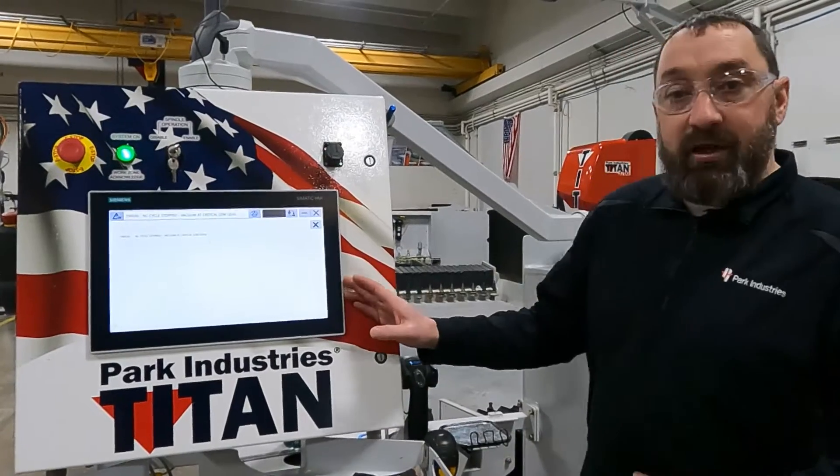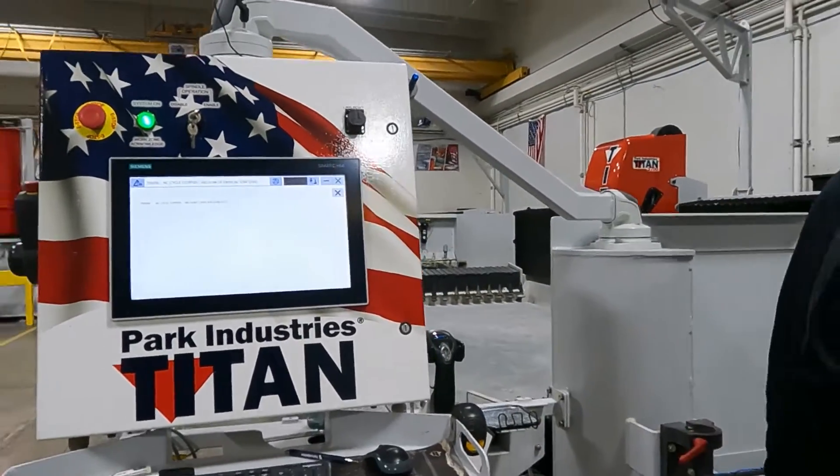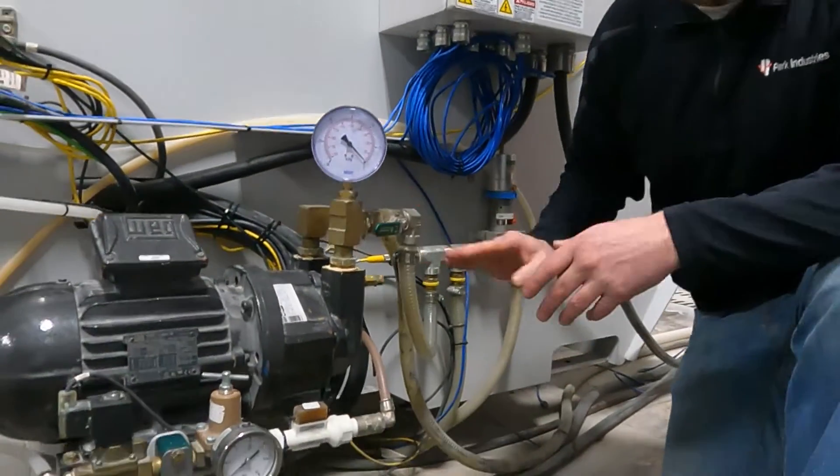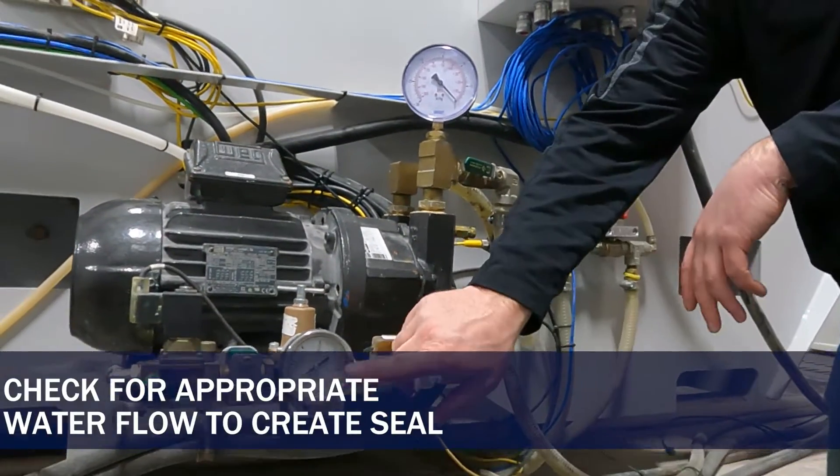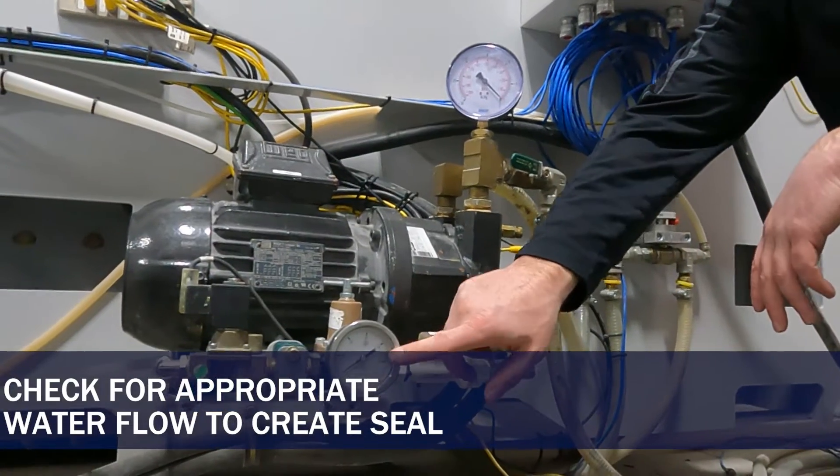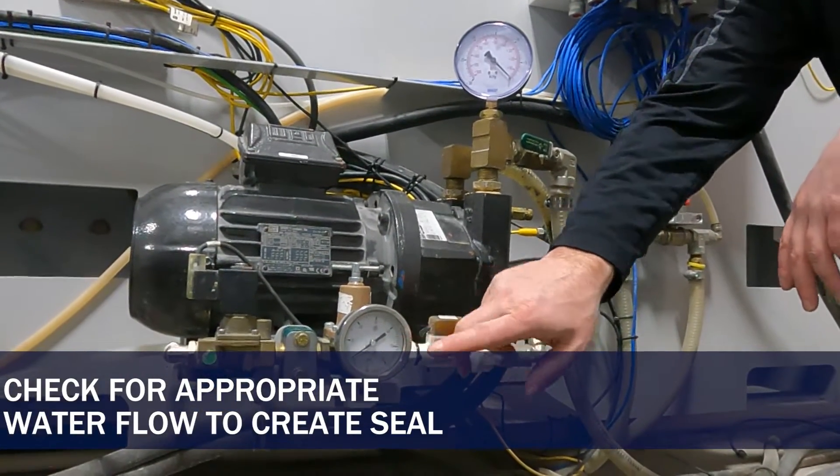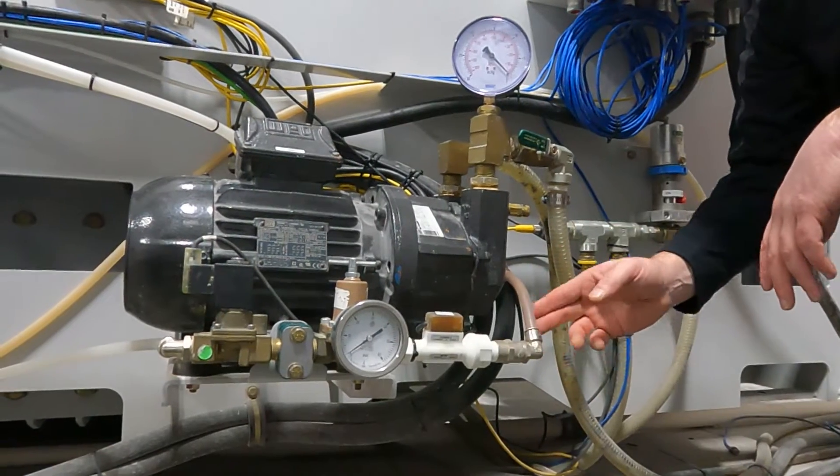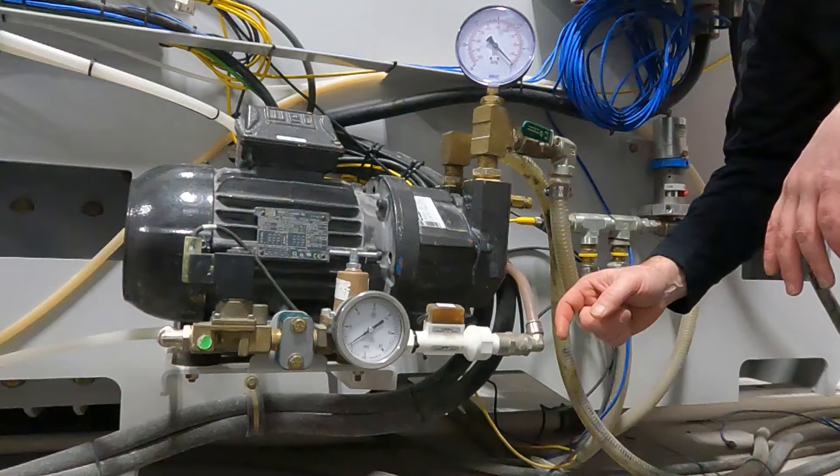So to start out with here, if you're getting one of these alarms, we're going to come over and first thing to check is vacuum water flow, making sure on this gauge you're getting two to five PSI of your water flow. If you're not, we do have another video to troubleshoot your vacuum water flow.